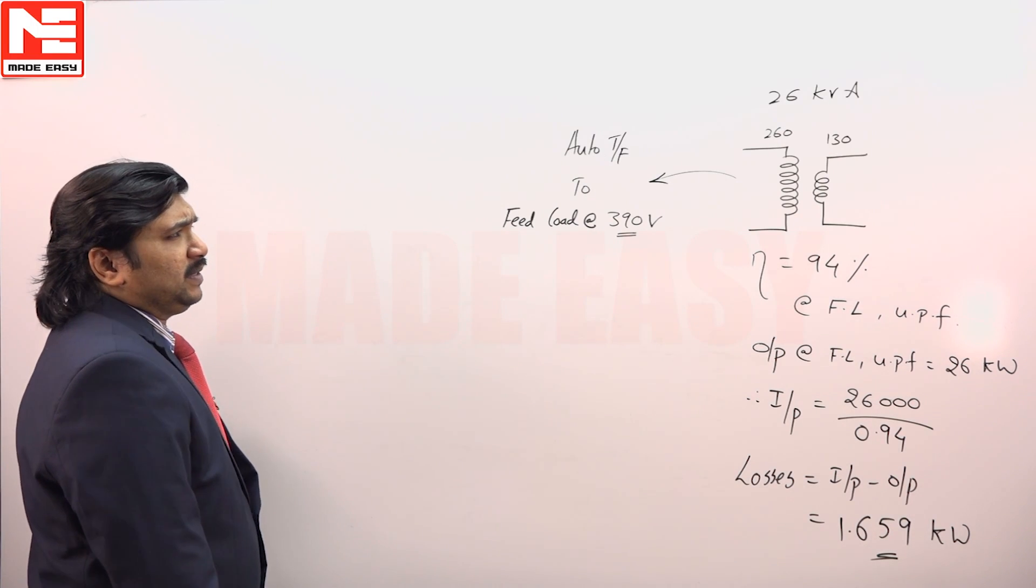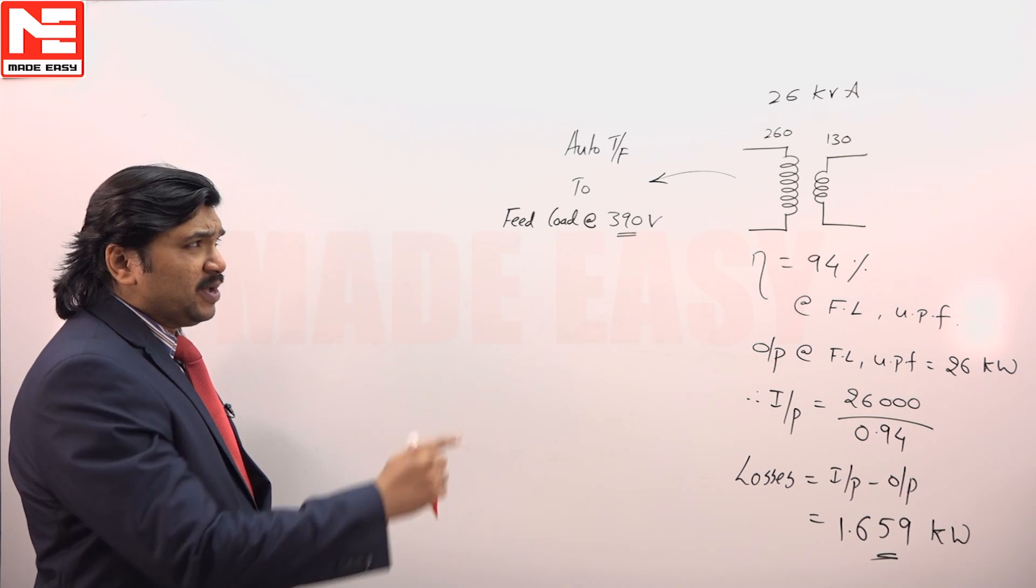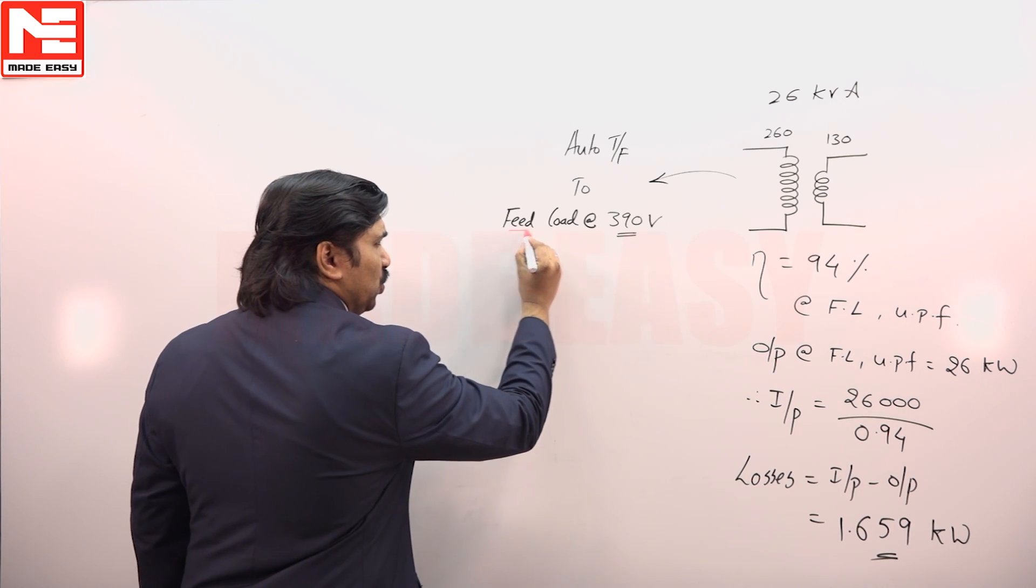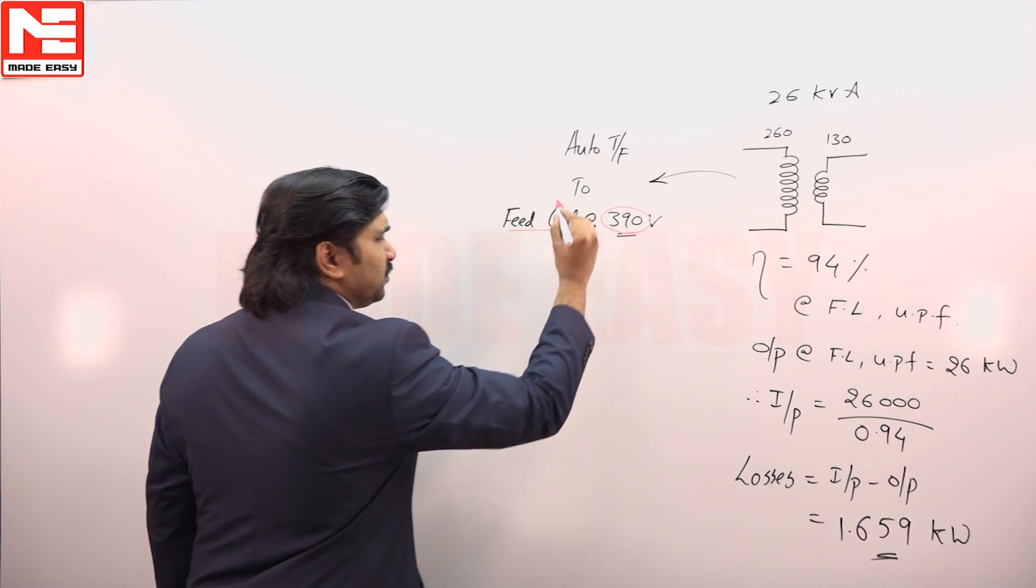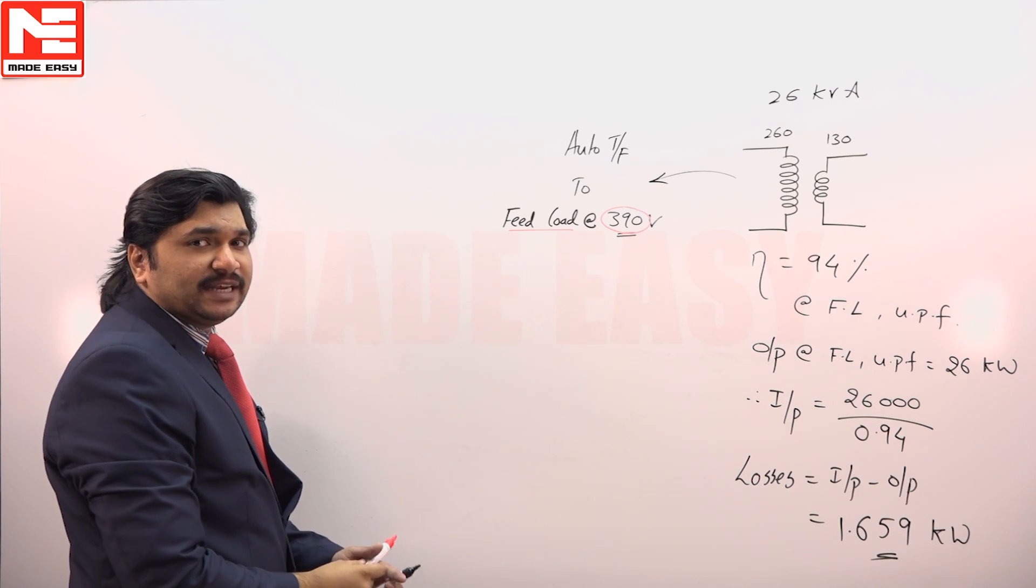This question was given like a 26 kVA 2-winding transformer is reconnected into an auto transformer to feed a load at 390 volts, which means definitely it should be connected into additive polarity.